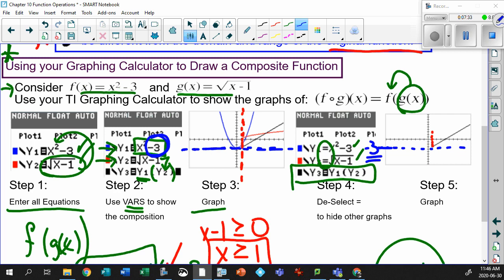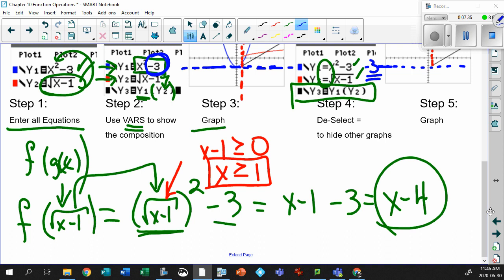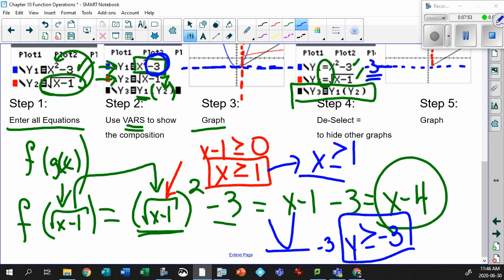And that's one of the reasons why we know that the restriction on the domain and range is x has to be greater than or equal to 1, which is this restriction here. And the fact that we're dealing with a parabola that dips all the way down to -3, we realize our parabola has to be greater than or equal to -3. Two restrictions based off the original graphs.